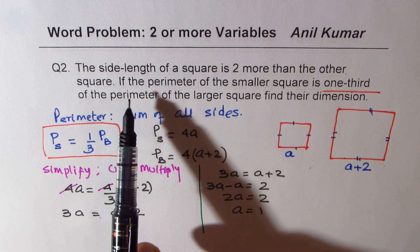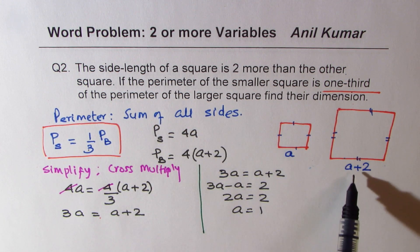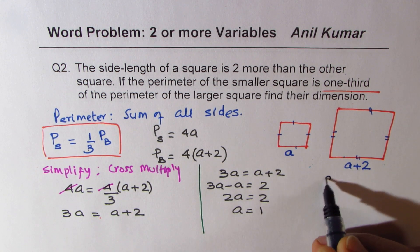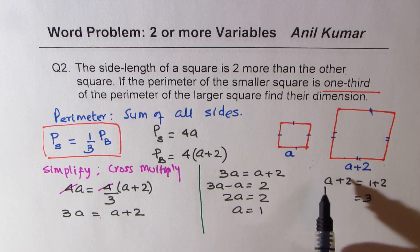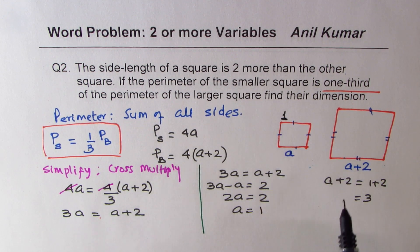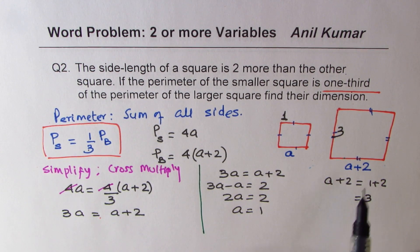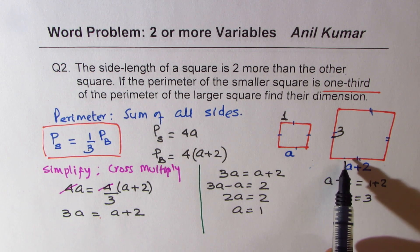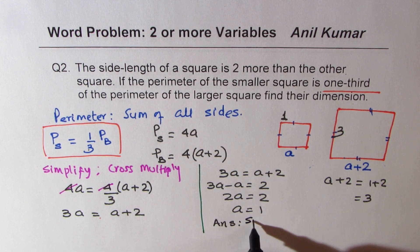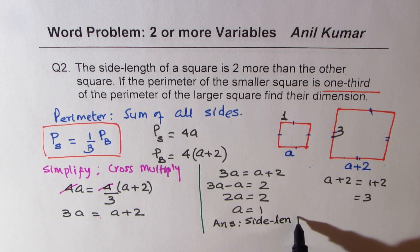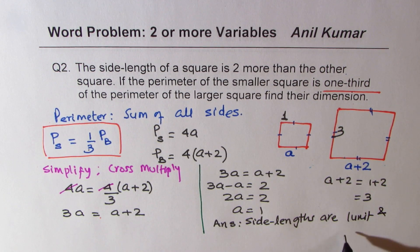The question asks to find their dimensions. If a is 1, then a plus 2 is 1 plus 2, which is 3. So we get the dimensions: the smaller square has sides of 1 unit each, and the bigger square has sides of 3 units each. The side lengths are 1 unit and 3 units.